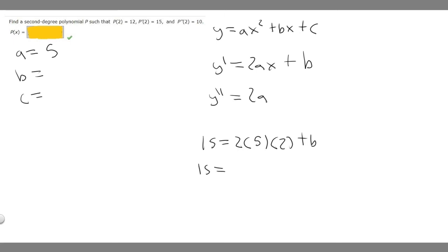So 15 = 2 times 5, which is 10, times 2 is 20, plus b. Subtracting 20 from both sides, we get b = -5.